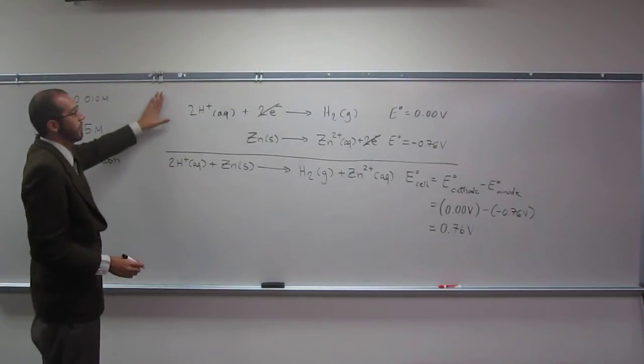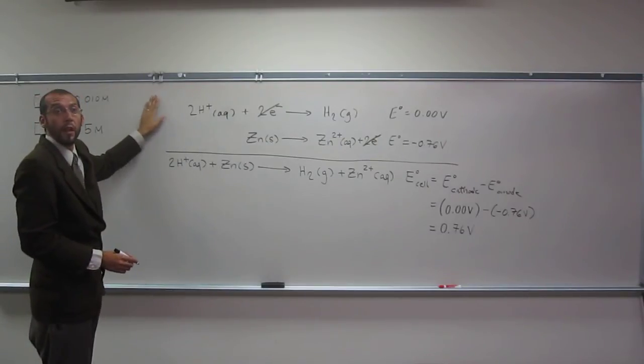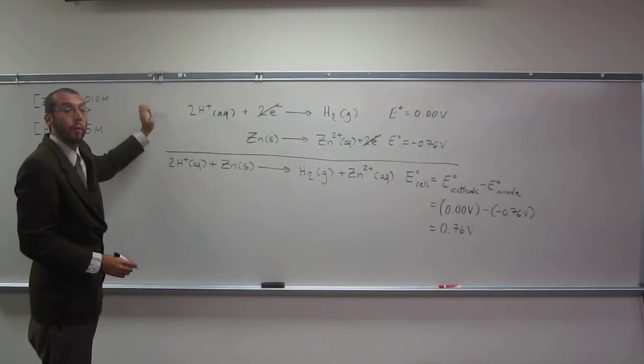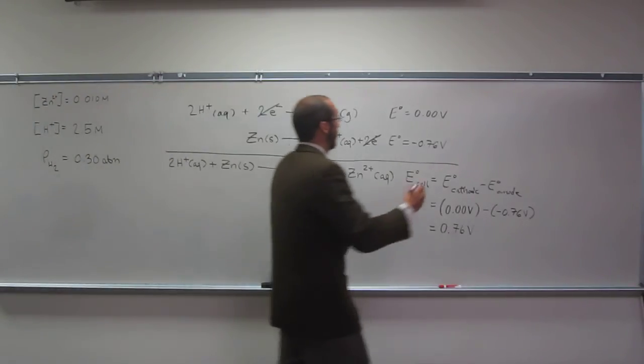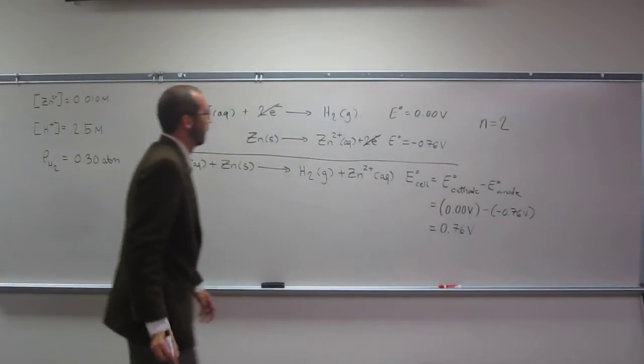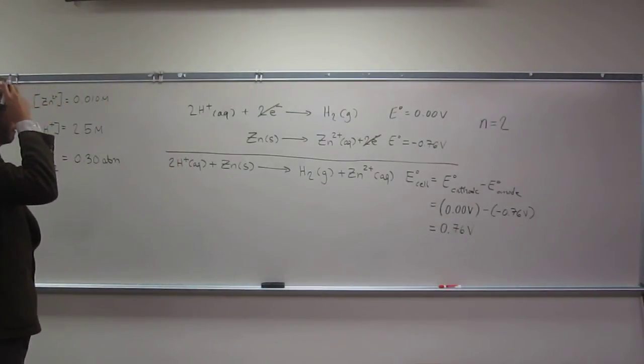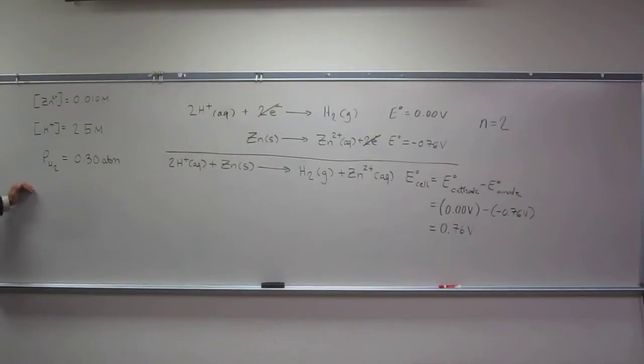Okay, I guess one thing that we should say, since we're going to be using the Nernst equation, is we're going to want to remember or figure out how many moles of electrons have been transferred. So n, remember? So what is n in this particular equation? And the other thing we want to do, so why were we given these things? Because we need to find Q for the Nernst equation. So I'm telling you all this. Let's write down the Nernst equation.